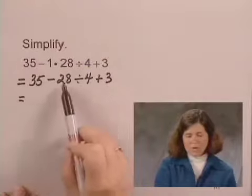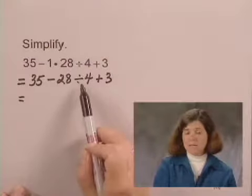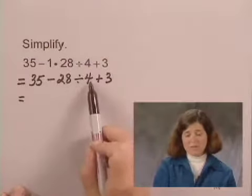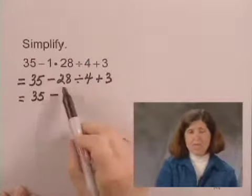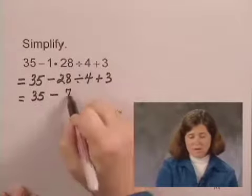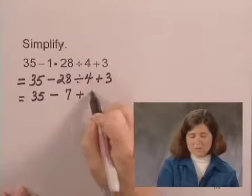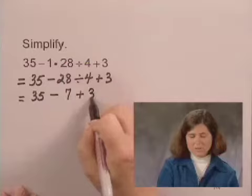Looking through from left to right, I see a division. That's the next thing I will perform is 28 divided by 4. So I have 35 minus 28 divided by 4 is 7, and I write the rest of the expression plus 3.